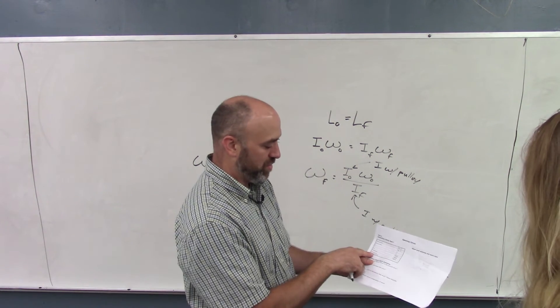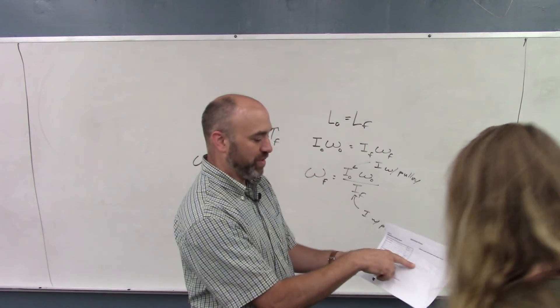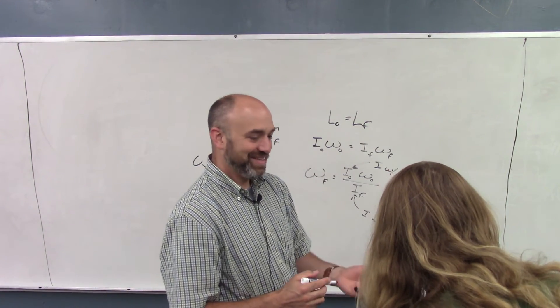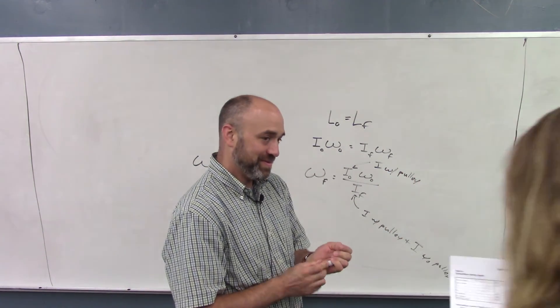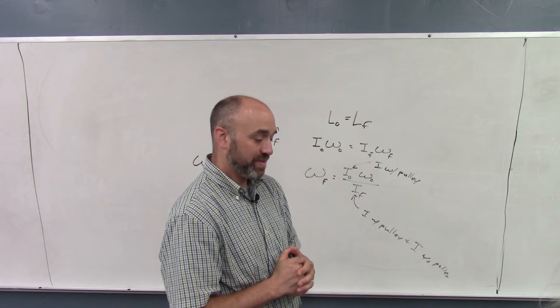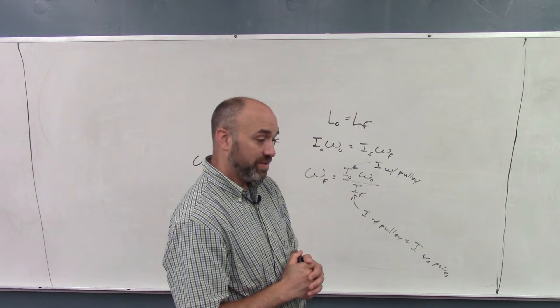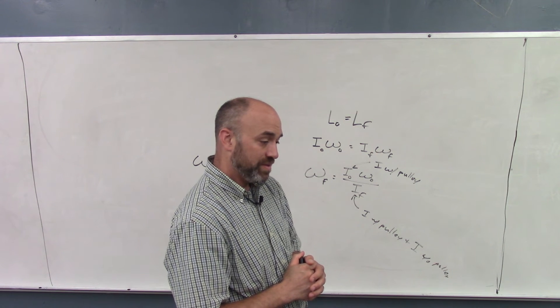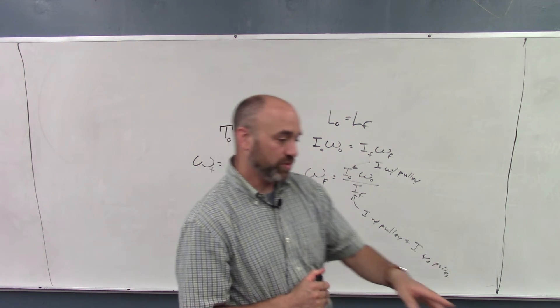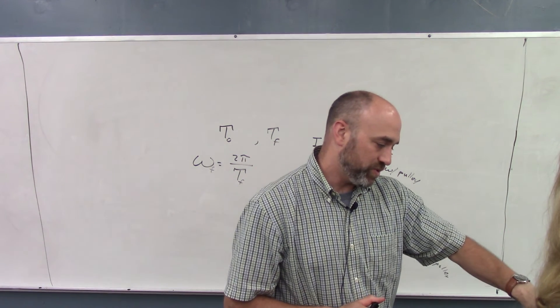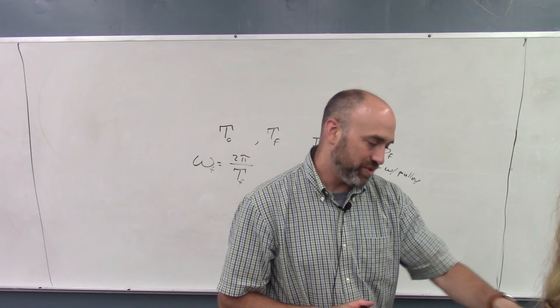And then the percent error, remember the equation for, oh, you got it right there. Yeah, measured down there. Okay. And percent error is going to be based off of what we found out for predicted. Yes. Yep. So this is predicted and measured, and this is truth and test.